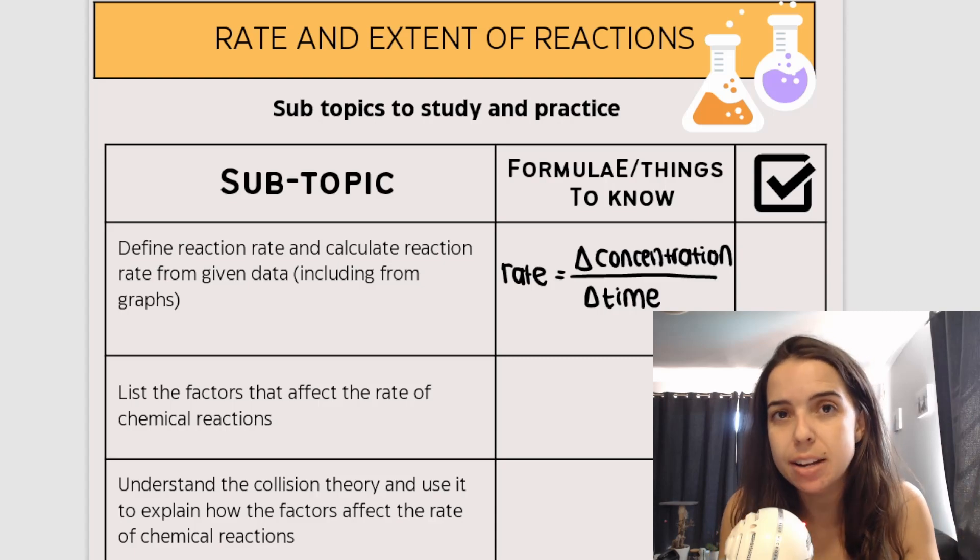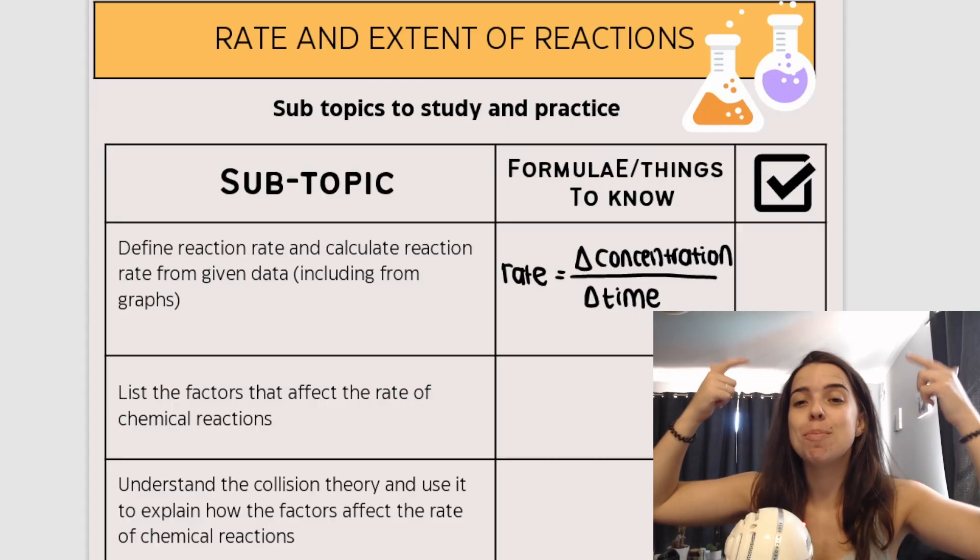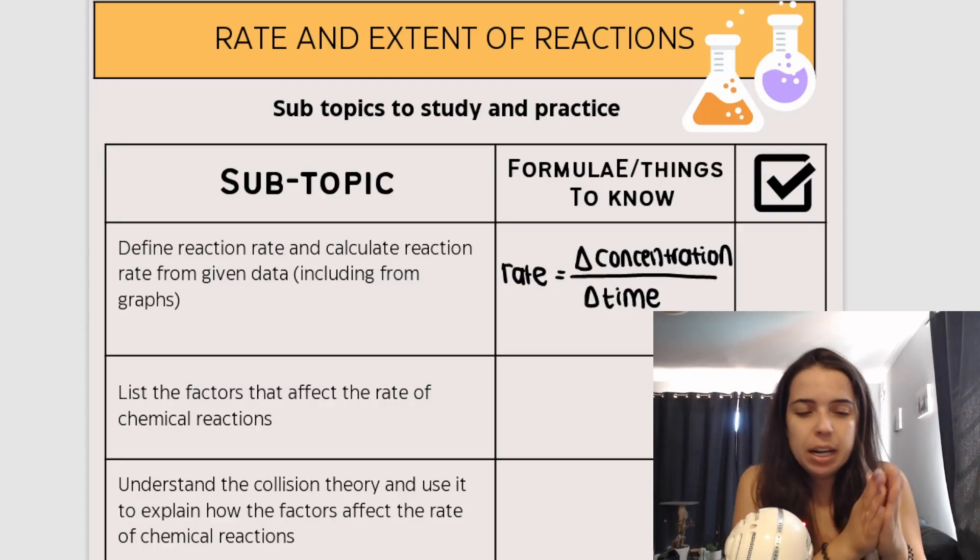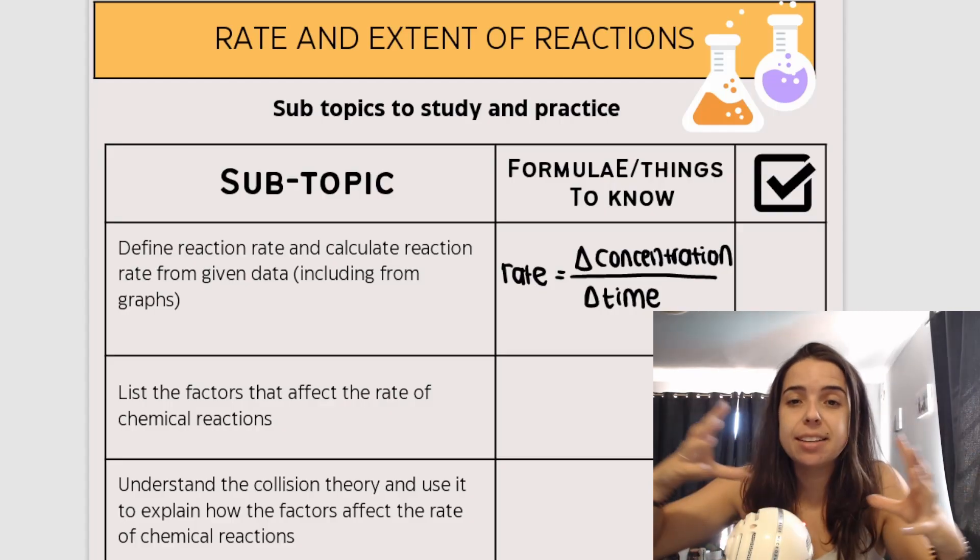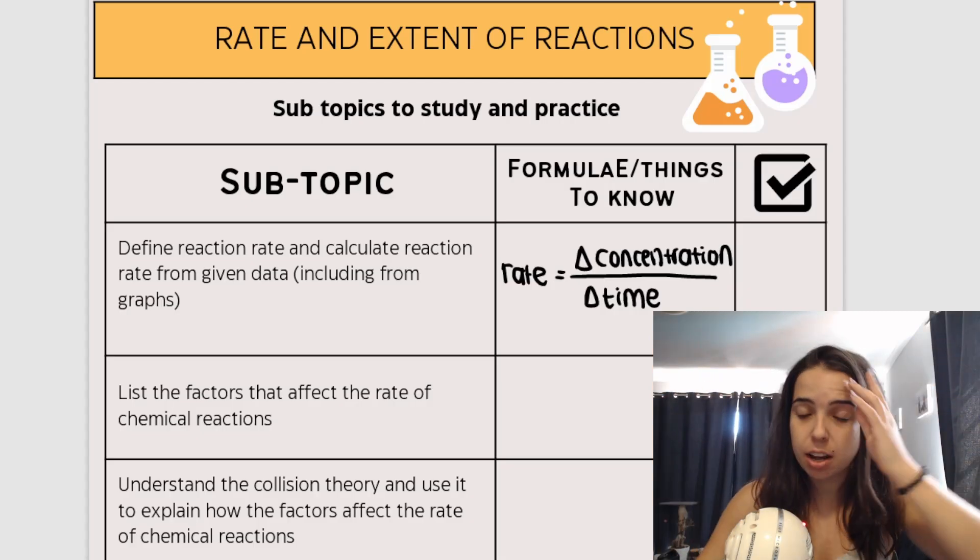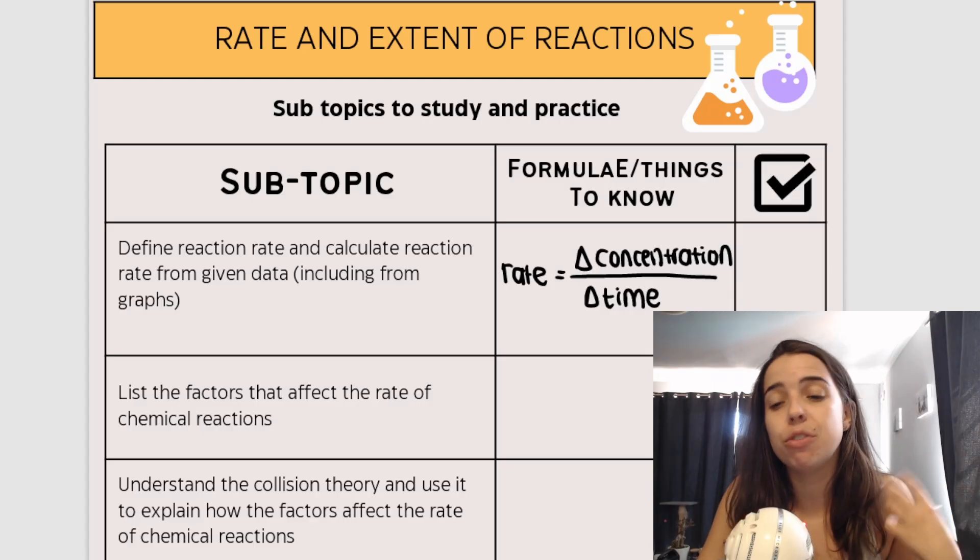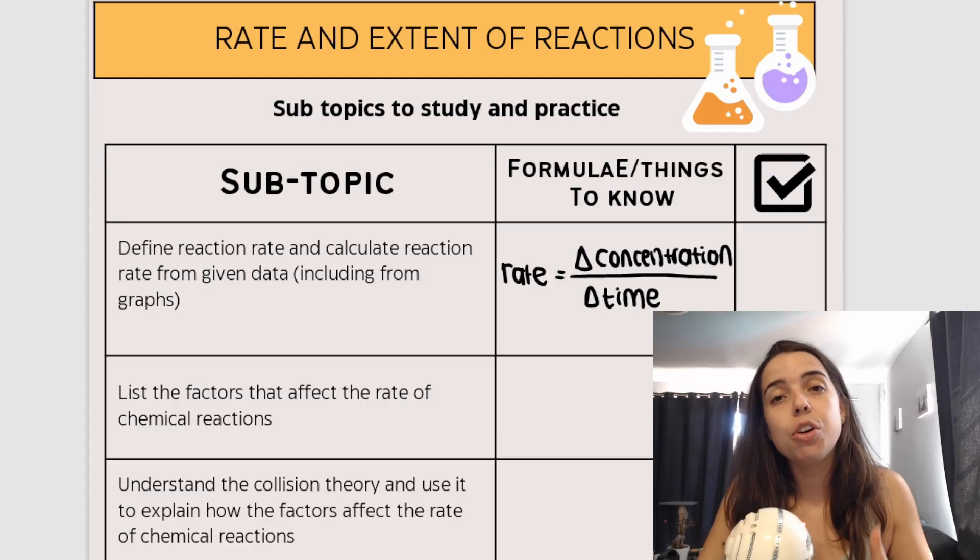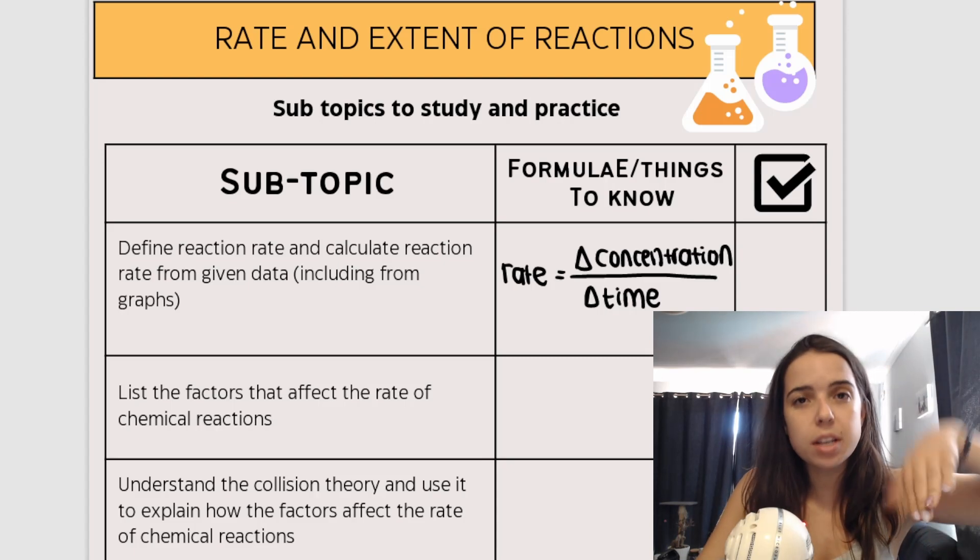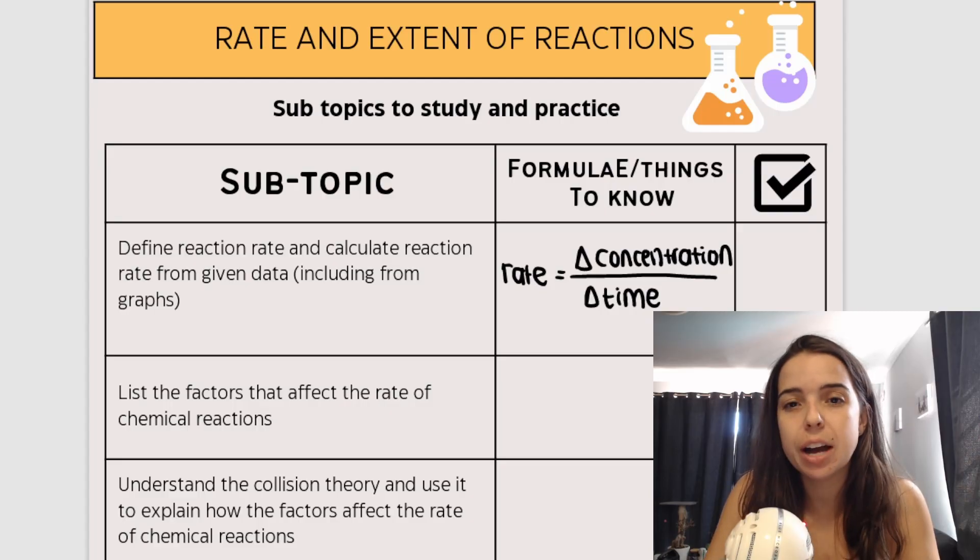So if they ask you to calculate the rate but they give you mass, how mass changes over time, then it'll be change in mass over change in time. If they give you how volume changes, so in the beginning we have no volume and at the end of the experiment we've collected a large volume of gas, then it'll be change in volume over change in time. You need to know a lot of different things like what different factors influence the rate of a reaction. So for example, temperature, so higher temperature, hotter, higher rates of reaction, colder, so lower temperature, slower rates of reaction or lower rates of reaction.